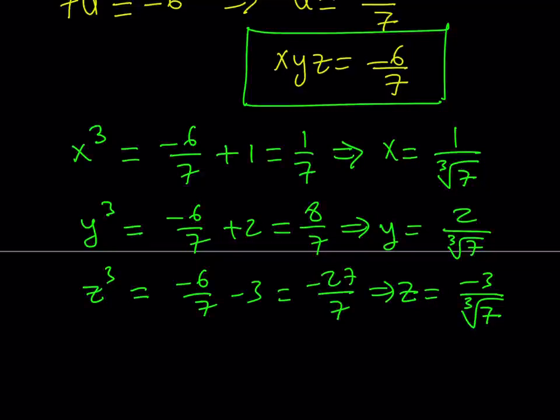Now, since if you look at the solutions carefully, you kind of notice that x, y, z are proportional somewhat. If you, for example, if 1 over cube root of 7 is a constant, like let's call that k, or we can call it x, then y would be 2x and z would be negative 3x.